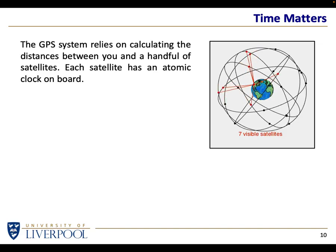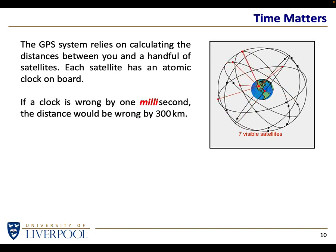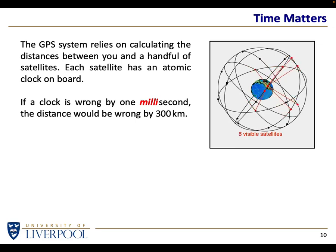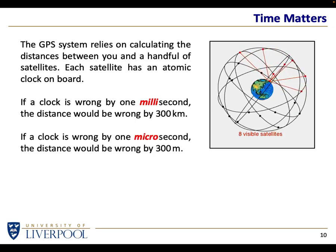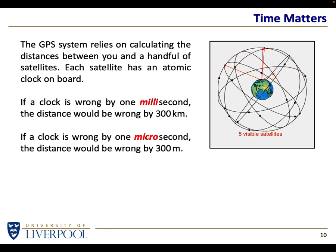It takes a fraction of a second for light to travel from satellite to surface. Given that the speed of light is 300,000 kilometres per second, if a GPS satellite clock were wrong by one millisecond, light can travel 300 kilometres in a millisecond — you wouldn't know your position better than 300 kilometres. Wrong by a microsecond and you'd be wrong by 300 metres. You really do need nanosecond-level accuracy to pinpoint yourself on the Earth's surface to an accuracy of a metre or so.